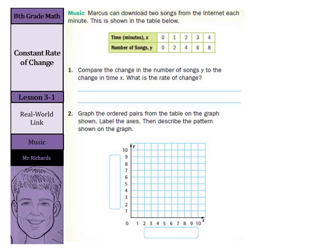In our first question here, Marcus can download two songs from the internet each minute. This is shown in the table below. It says to compare the change in the number of songs Y to the change in time X. And what do we notice?